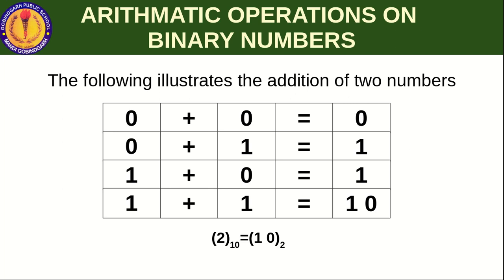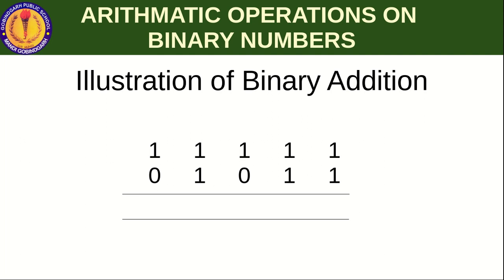Let us take another illustration. One plus one is two, and binary equivalent of two is 1 0. So one plus one gives zero and carry one. That carry one moves to the next column. Now in that next column there are three ones. We first add two of the ones: one plus one gives zero and carry one. Then zero plus the third one gives one.